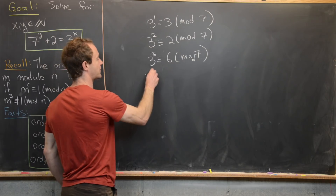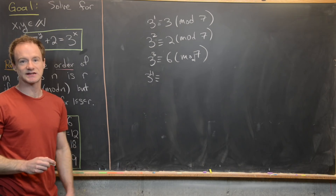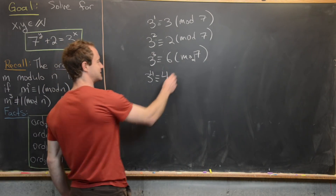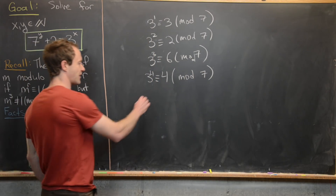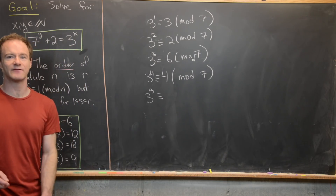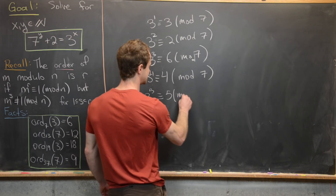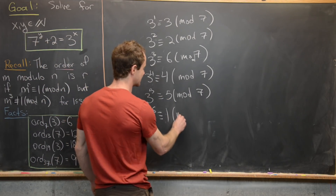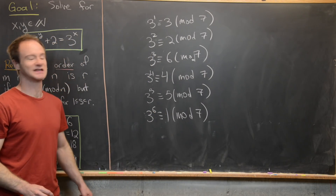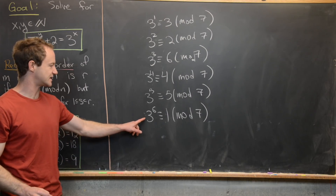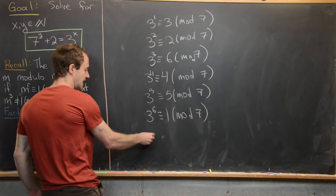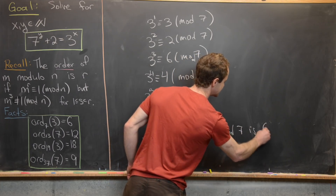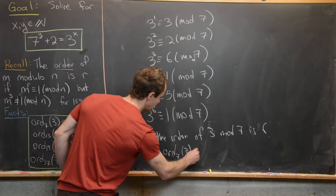Continuing: 3 to the 4th equals 3 times 6 equals 18, which is 4 mod 7. Then 3 to the 5th is congruent to 12, which is 5 mod 7. Finally, 3 to the 6th is congruent to 15 mod 7, but 15 is the same as 1 mod 7. We did not hit 1 mod 7 until the 6th power, so 6 is the smallest such exponent, meaning the order of 3 mod 7 is 6.